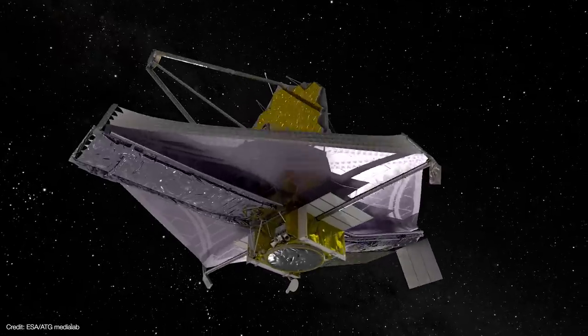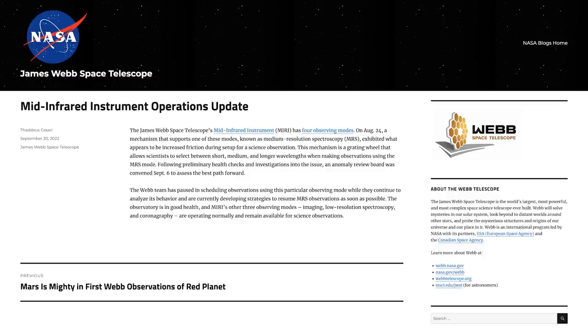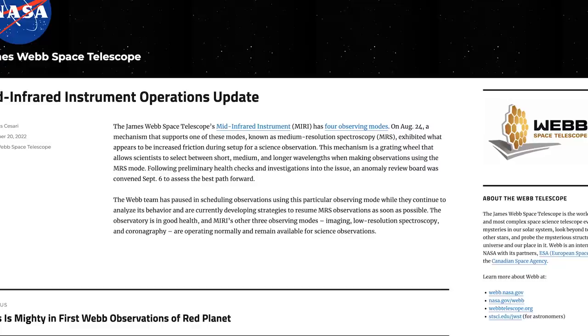The James Webb Space Telescope has a problem, or specifically, one of its science instruments has a problem - that instrument being the mid-infrared instrument, or MIRI. According to NASA and ESA's press release, MIRI was setting up for an observation on August 24th when one of its wheels suddenly got a little bit sticky.